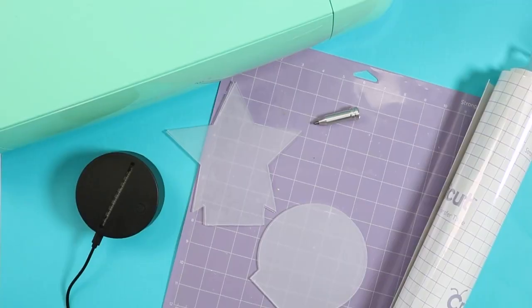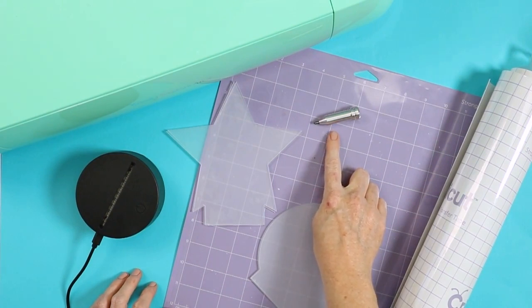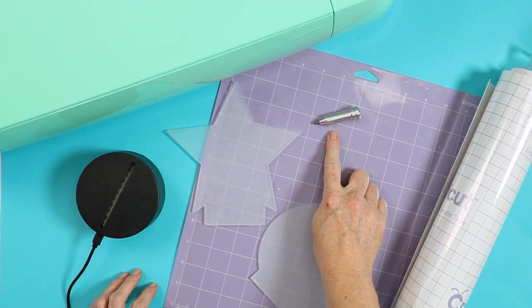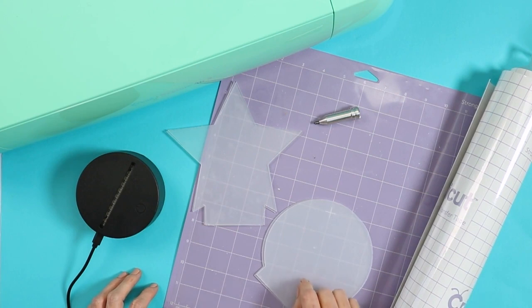You're going to need the following supplies: engraving tip for the Explore machine. I will link to this below. However, if you have a Maker, you can definitely use the engraving tip for that and your Maker machine. Then you'll need your acrylic blanks. You'll need two per nightlight, and I will show you why later.